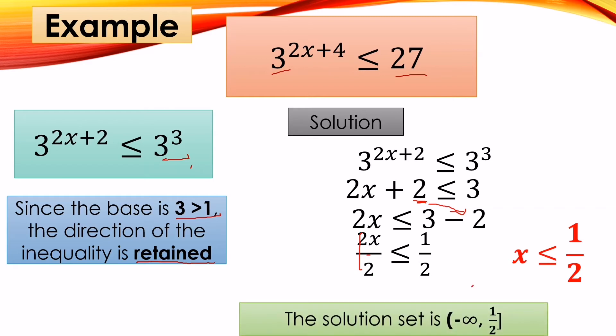The solution set is (−∞, 1/2]. Why do we use a bracket? Because 1/2 is included in the solution set. Remember: we use an open parenthesis when the solution is not included, but a bracket when it is included.